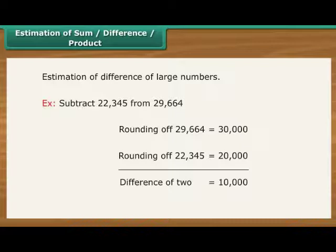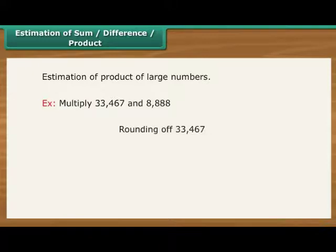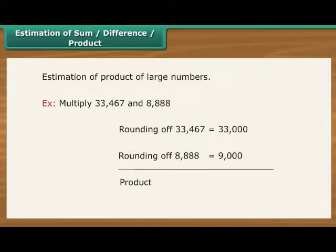Estimation to nearest number can help in the estimation of the product of two large numbers. For example, multiply 33,467 and 8,888. Rounding of 33,467 is equal to 33,000. Rounding of 8,888 is equal to 9,000. Product is equal to 33 into 9 followed by six zeros, which is 297,000,000.